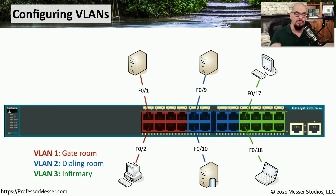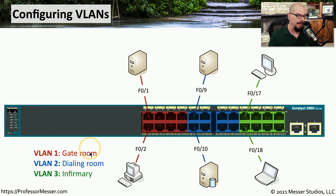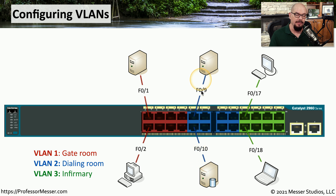If you look at a physical switch configuration, here's one where three separate VLANs are configured: VLAN 1, VLAN 2, and VLAN 3. There are devices connected to each one of these VLANs, and the devices on a single VLAN can't communicate to any of the other VLANs on the switch.